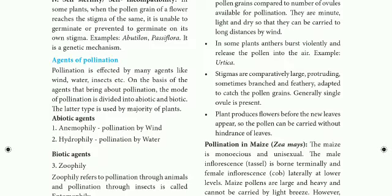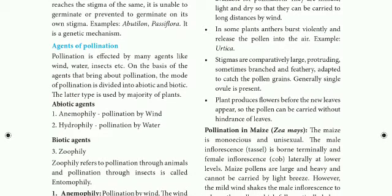In the next video, we will talk about agents of pollination. Pollination is affected by many agents like wind, water, and insects. Based on the agents that bring about pollination, the mode of pollination is divided into two types: Biotic and Abiotic.